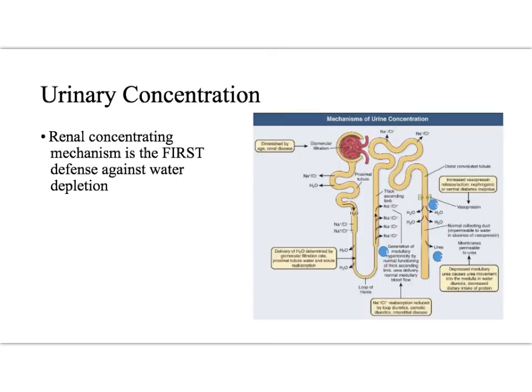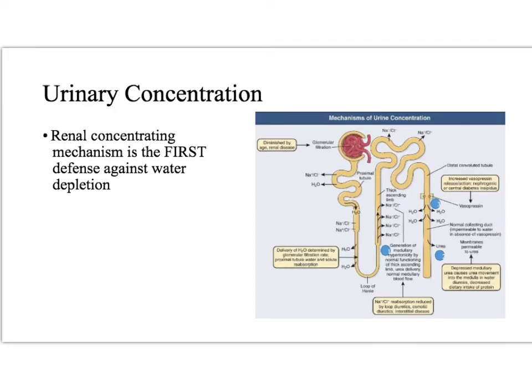First, let's talk about urinary concentration. Renal concentrating mechanisms are the first line of defense. There are two main steps to prevent hypernatremia, and we're going to discuss when these steps can go awry. The first is the urinary concentrating mechanisms, which is really the first line of defense against water depletion. The second is thirst, which we'll talk about in a little bit.